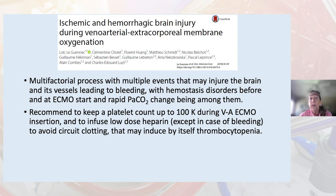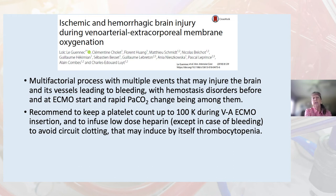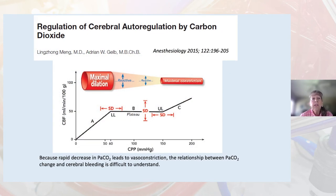One author recommends keeping platelet count above 100,000 during VA ECMO insertion and infusing low-dose heparin unless the patient is profusely bleeding, to avoid circuit clotting that may induce thrombocytopenia. The regulation of cerebral autoregulation by carbon dioxide is important here — because of the rapid decrease in CO2 leading to vasoconstriction, the relationship between PaCO2 change and cerebral bleeding is difficult to understand, with maximum dilation at point A and maximal constriction at point C.